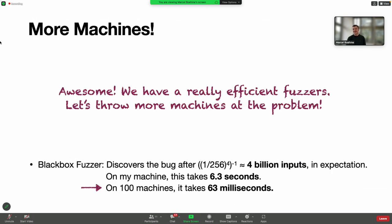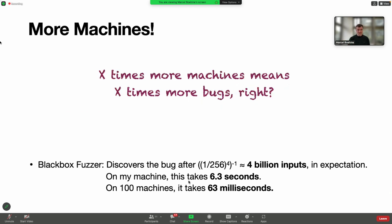The insight is, if we have a really efficient fuzzer, let's throw more machines at the problem. On my machine it takes 6.3 seconds. On 100 machines it takes 63 milliseconds to find the same bug. So you might think, if I have x times more machines, I can find x times more bugs, right? And again, we are wrong.